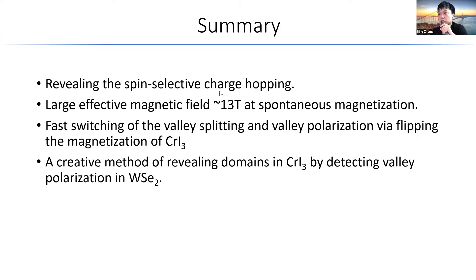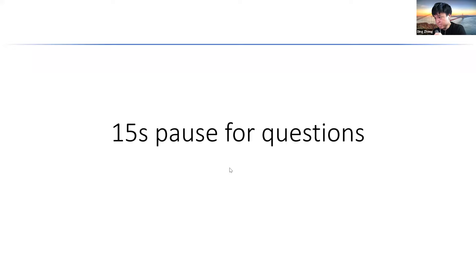In summary, we reviewed ultrafast spin-selective charge hopping, achieved a large effective magnetic field at spontaneous magnetization, saw fast switching of valley splitting and valley polarization via flipping the magnetization of CrI₃, and found a creative method to reveal the domain pattern in CrI₃ by detecting valley polarization in WSe₂.